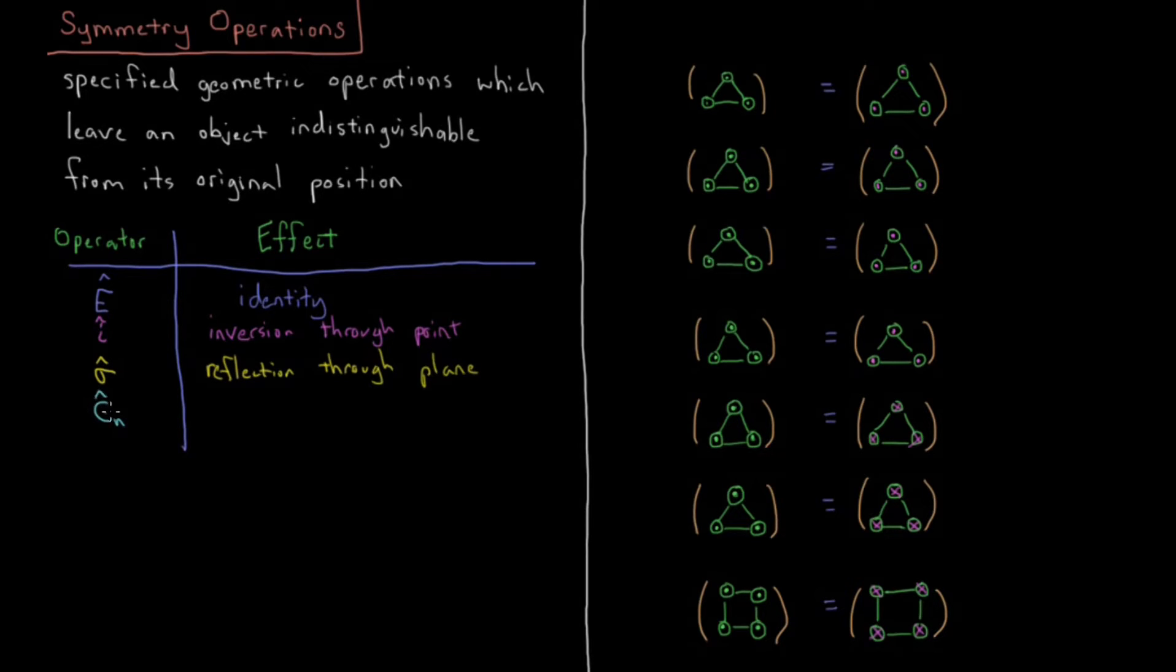We have CN, which is going to be proper rotation. Proper just means the rotation is done by itself as opposed to improper, which we'll see in a second. That is proper rotation by 360 divided by N degrees. So C1 is rotation by 360 degrees, 360 over 1. C2 is rotation by 360 over 2 is 180 degrees. C3 is rotation by 120, C4 by 90, et cetera. The N indicates some general integer there.